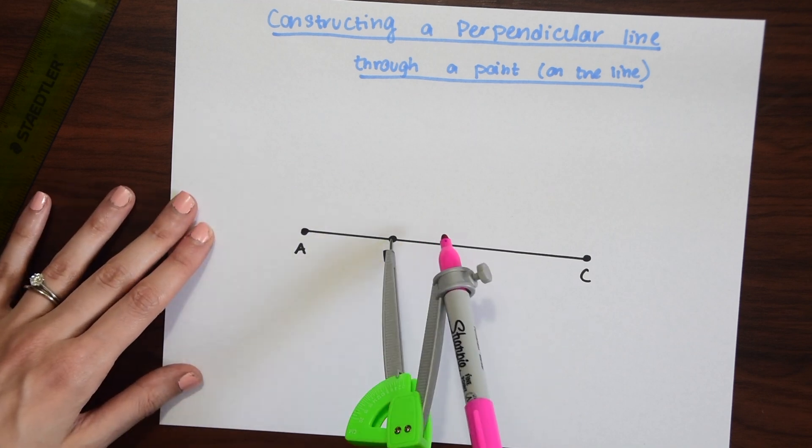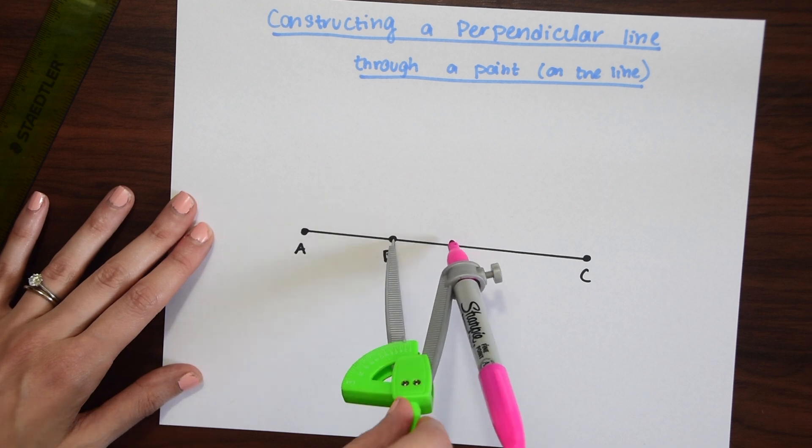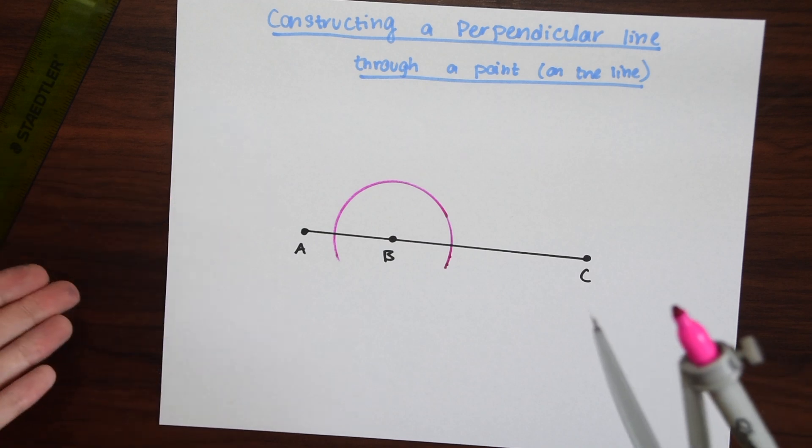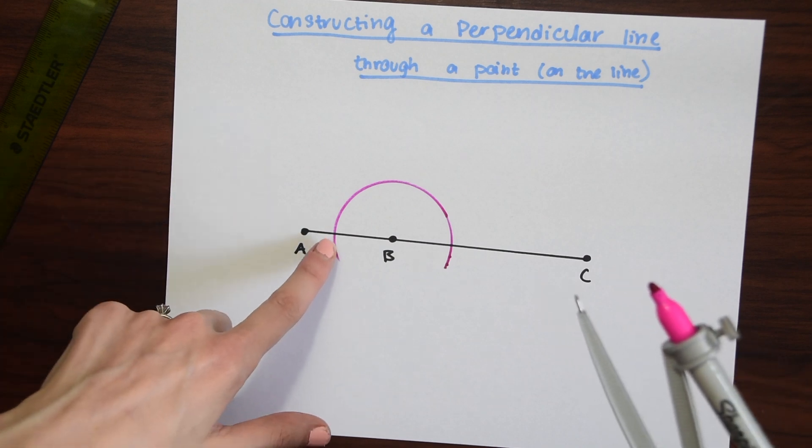the line we're trying to intersect, and then just swing this around. So we swing this around and make a little bit of a semicircle making sure that we intersect with our original line.